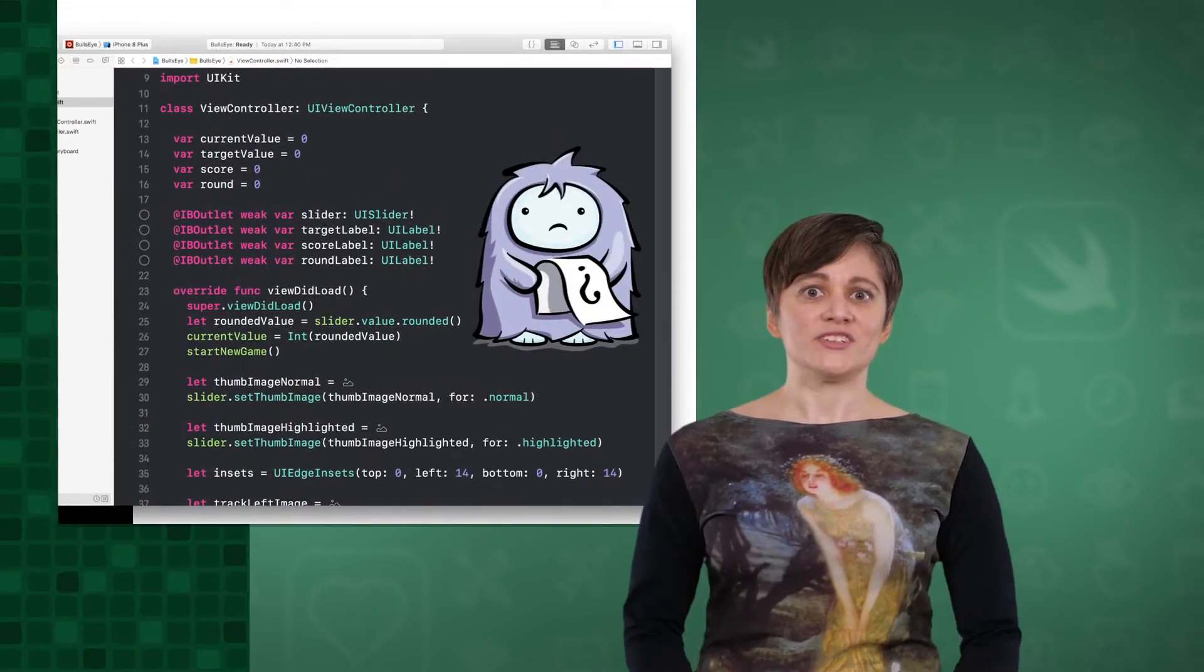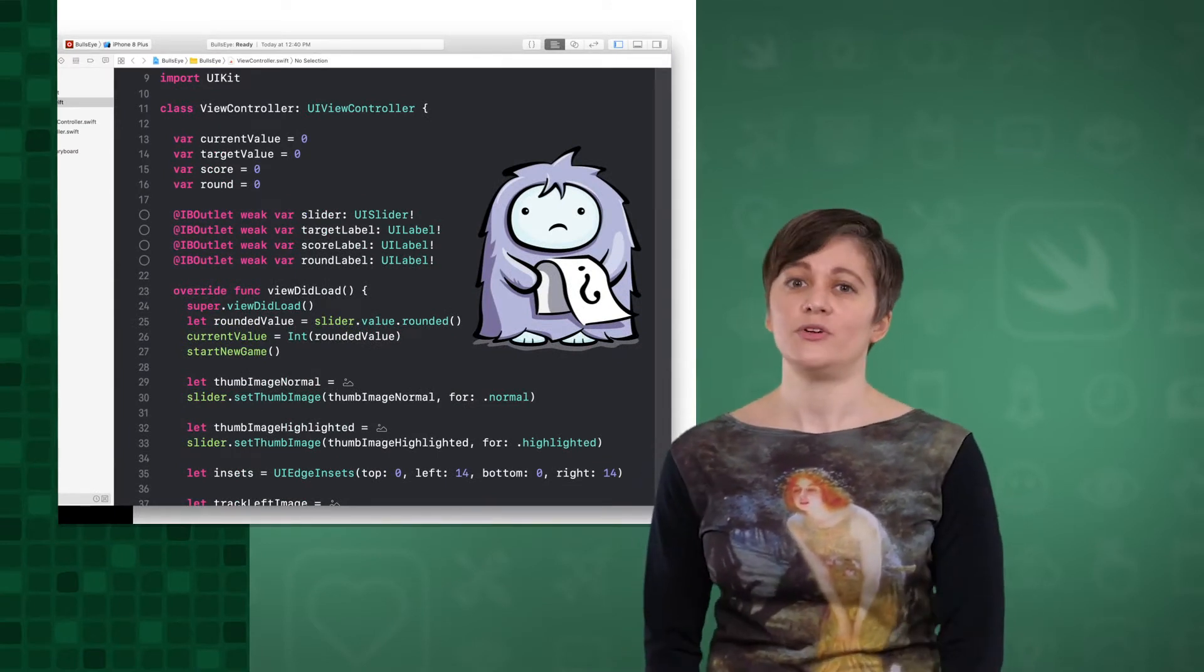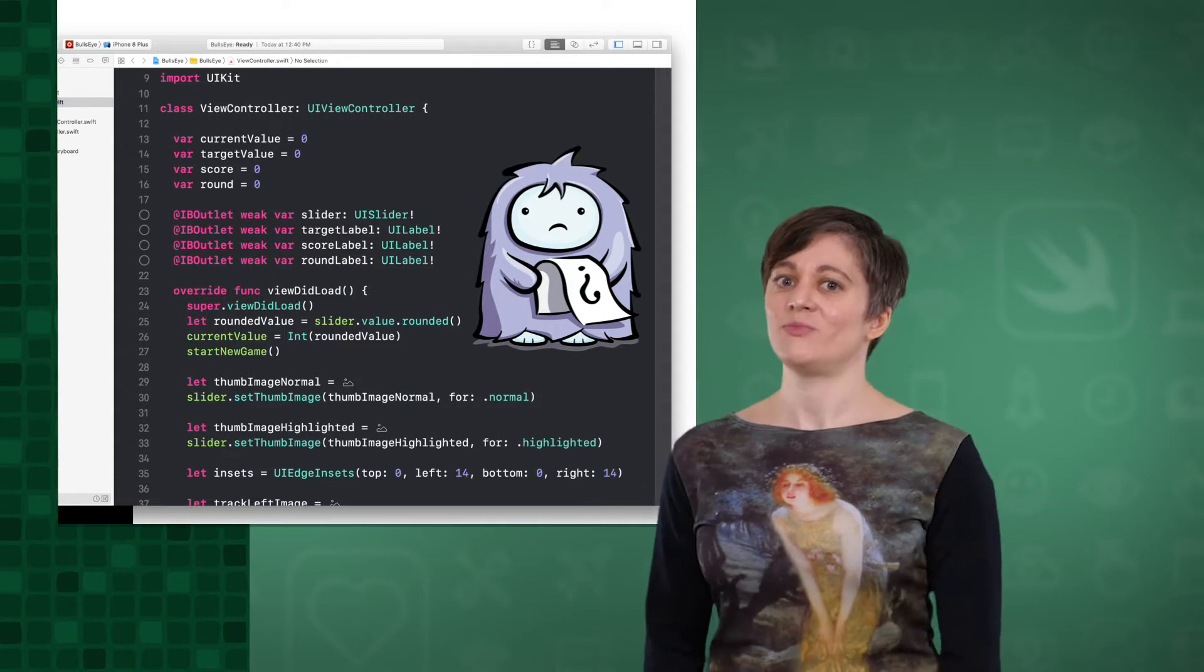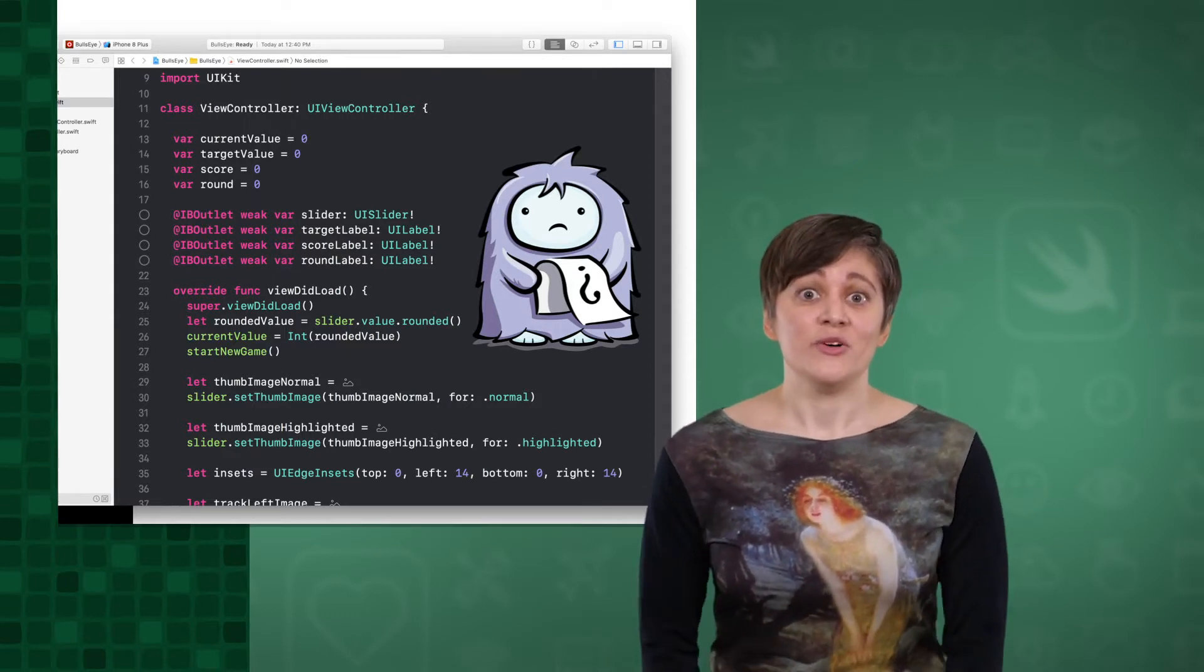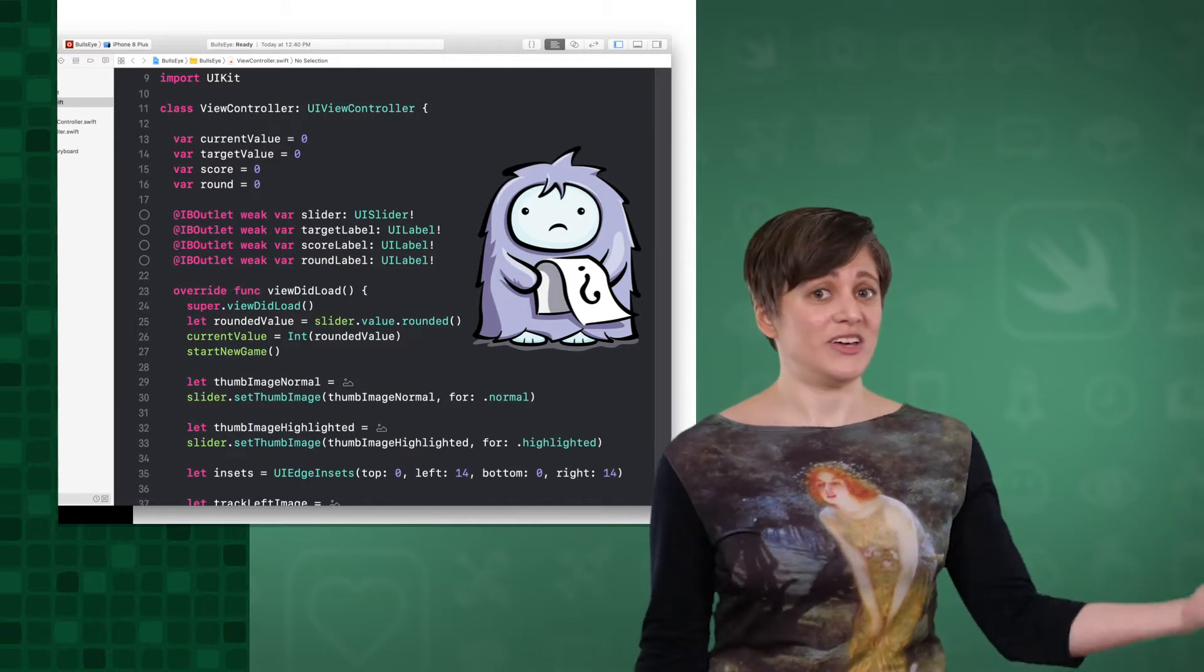Optionals can be a point of confusion for beginners in Swift. When you start to see a bunch of exclamation marks and question marks punctuating Swift code, you might wonder what's happening. When you see these two things at the end of a bit of code, that indicates you're looking at an optional.